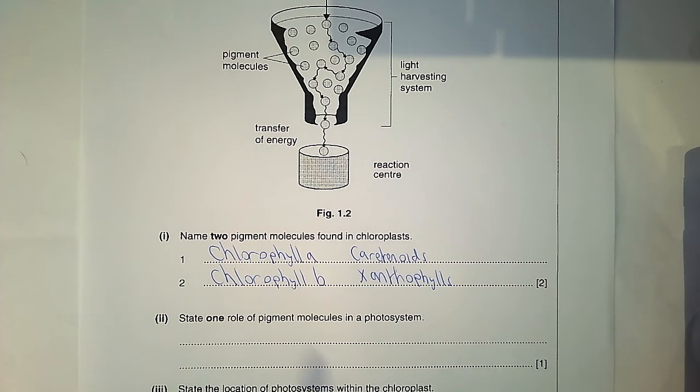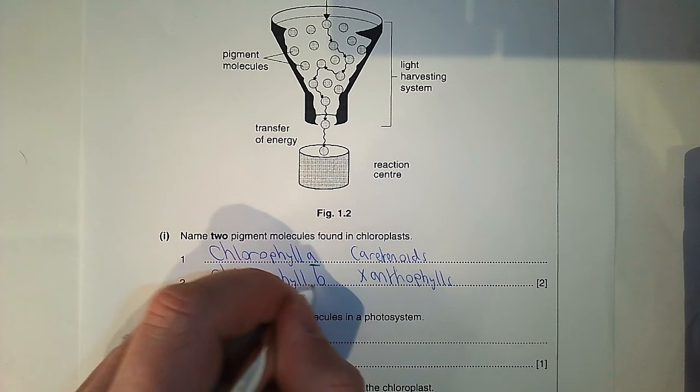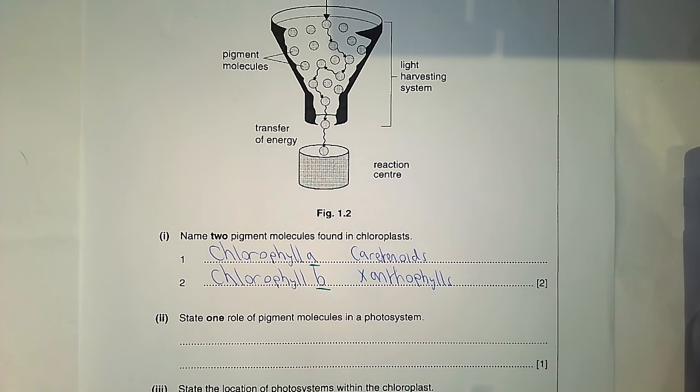So we've got four different pigments. We've got to name two of them. Just be careful with chlorophyll, make sure you state a and b. If you wrote chlorophyll on its own, it's likely to just get you one mark.